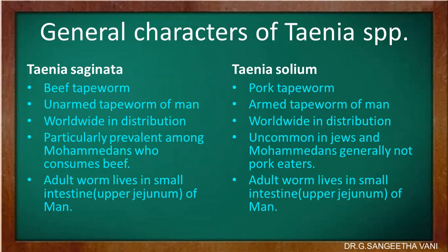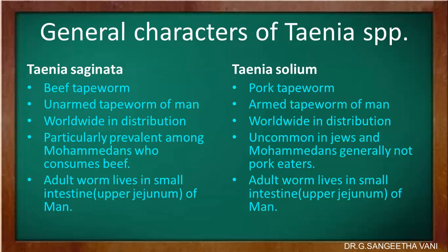The general characters of the Taenia species: both Taenia saginata and Taenia solium are tapeworms with worldwide distribution. The adult worm lives in the small intestine of man, specifically in the upper jejunum. They move against the peristaltic movement in the host intestine and are semi-transparent in nature. Taenia saginata is also called the beef tapeworm or unarmed tapeworm, particularly seen in Muslims who consume beef. Taenia solium is also called the pork tapeworm or armed tapeworm of man. It is not seen in Jews, as Muslims and Jews generally do not eat pork.